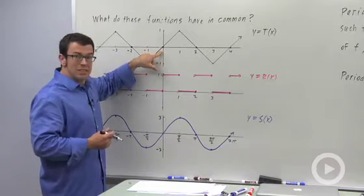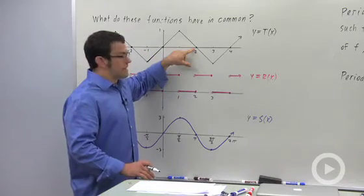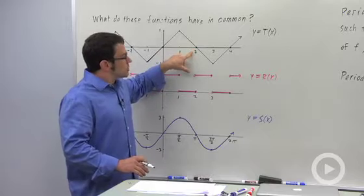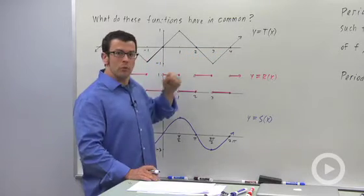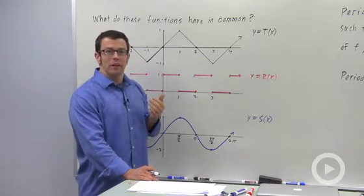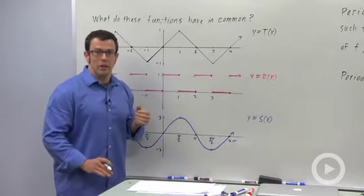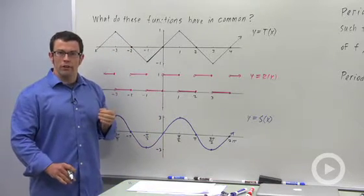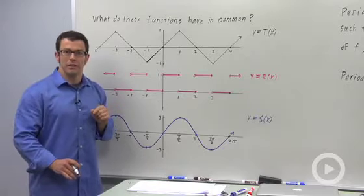And if I add 2 to 0, I get 2, which has an output of 0. If I add 2 again, I get 4, which has an output of 0. So have I found the p value that I need? The answer is no, because that p value won't work for all inputs. Let me give you an example.